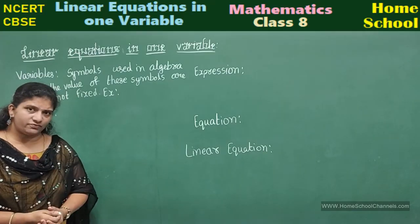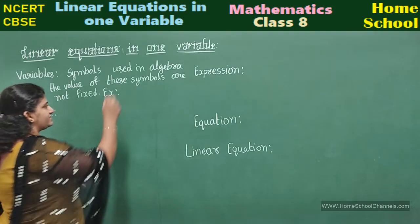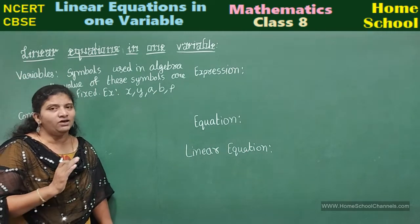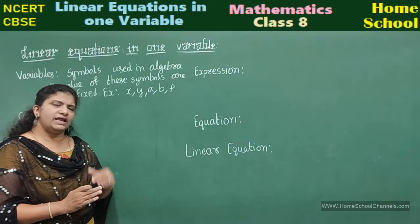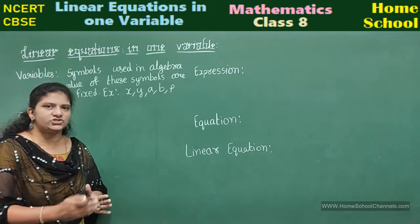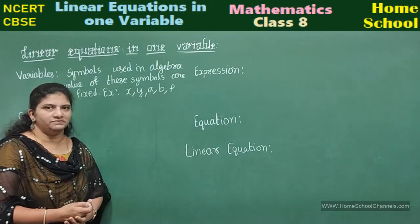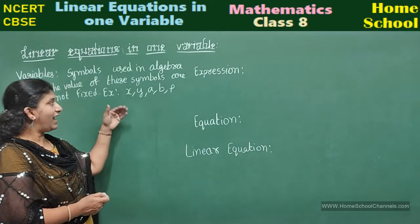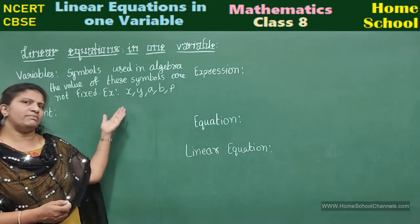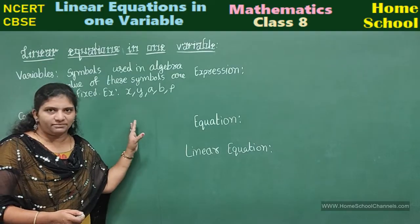The symbols are alphabets. We use alphabets to represent variables — like X, Y, A, B, P, Q — any alphabet you can take to represent any variable. X will be having a numerical value, and that value is changing every time. So we call these symbols variables because the value of these symbols is not fixed; it will be changing always. Sometimes X may be 5, sometimes 2 or minus 1, or any value.